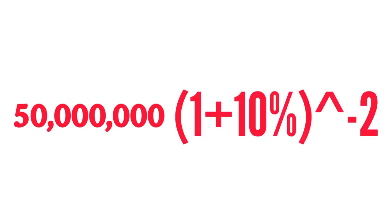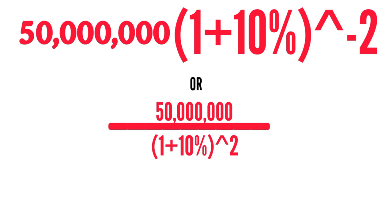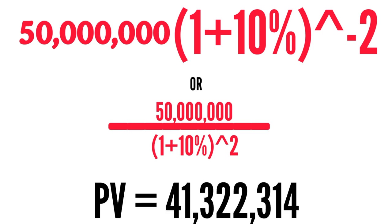So let us discount this 50 million. You have 50 million times one plus 10 percent raised to power minus two, or you can say 50 million divided by one plus 10 percent. The difference in this arrangement - there's no difference basically, it's just the law of indices. When you do this, you're going to have 41 million...